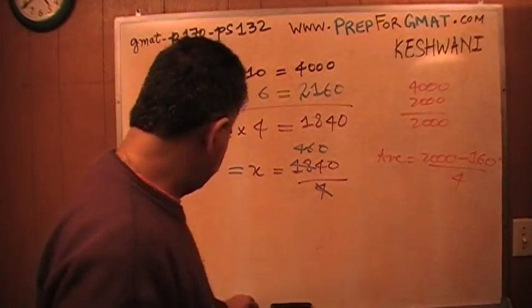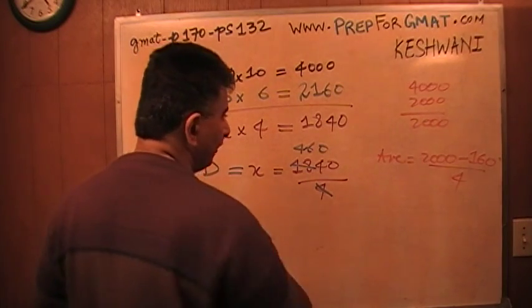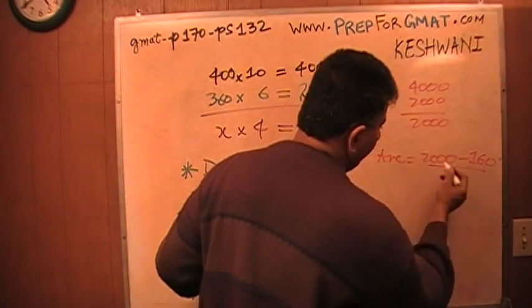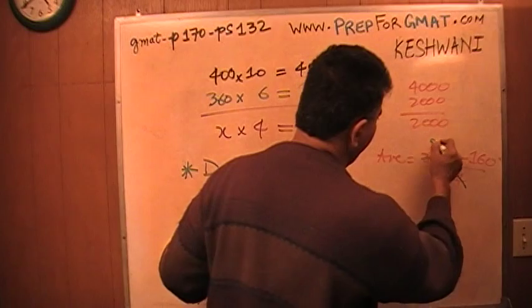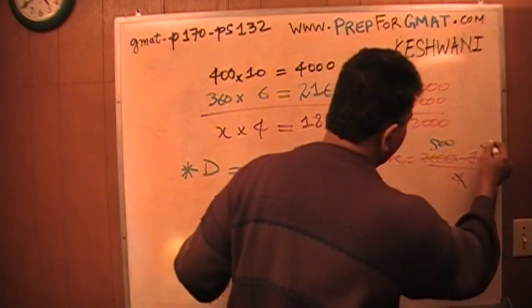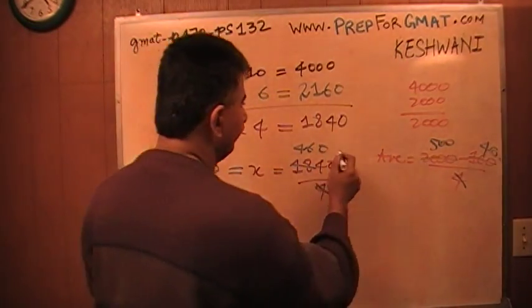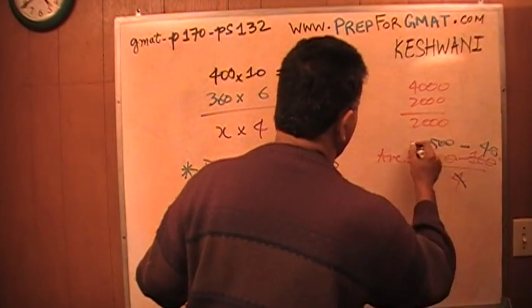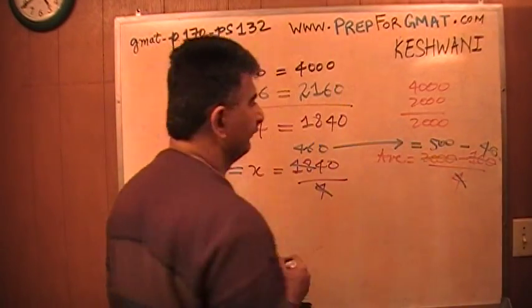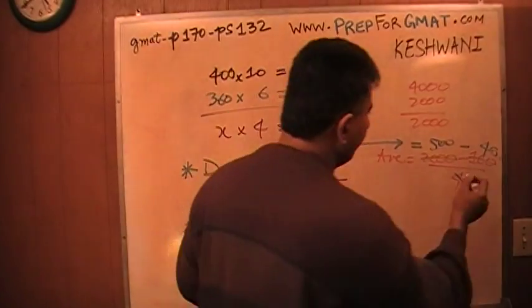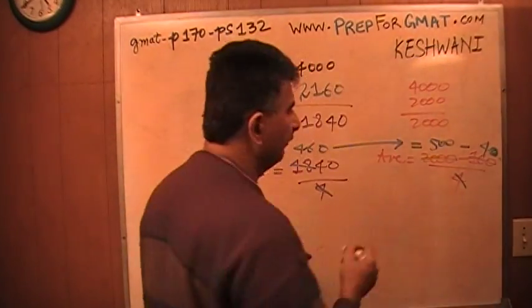So this is the average if I were to divide this by 4. That becomes very simple because 2,000 divided by 4 is 500 minus 40. 500 minus 40 is 460. 160 divided by 4 is 40.